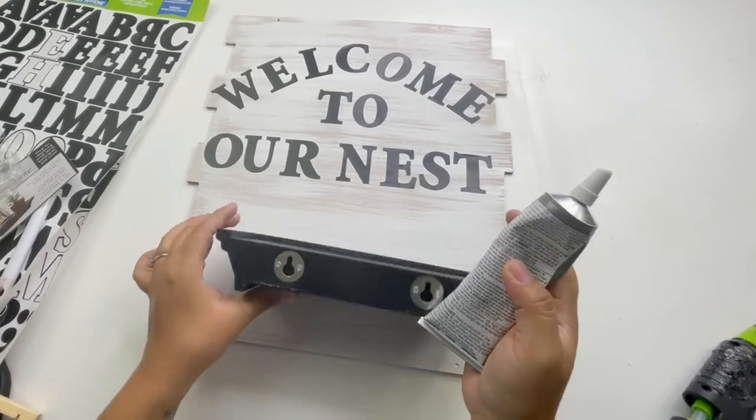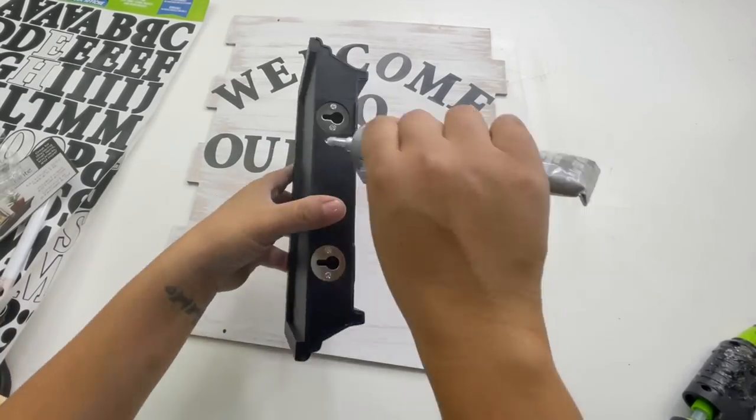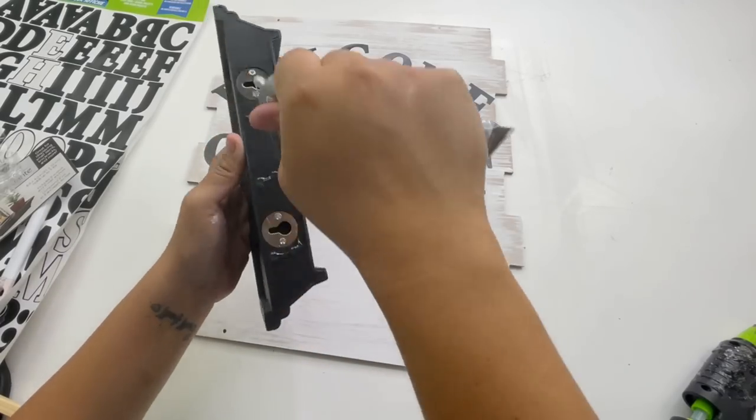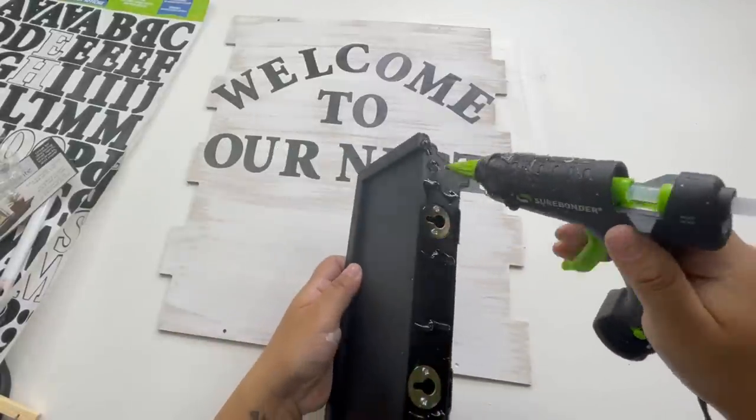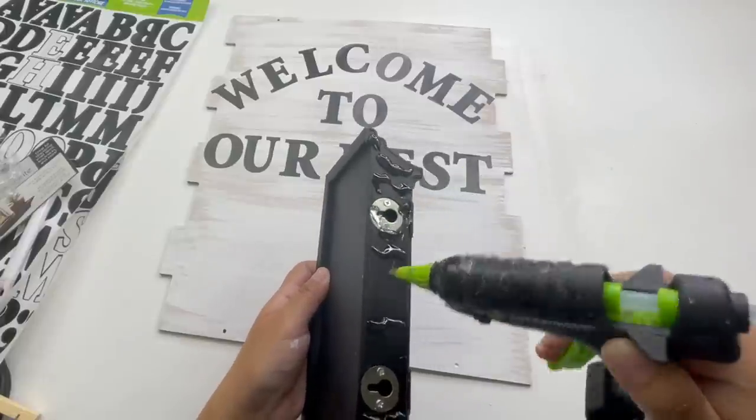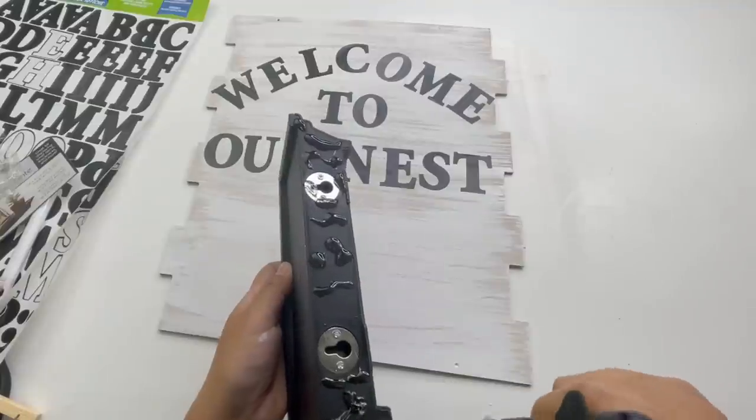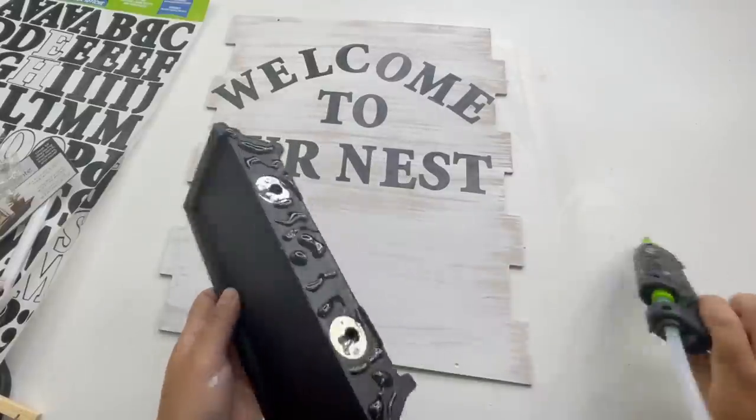To add the shelf I used a combination of hot glue and E6000 to make this sturdy. And the last thing I did was use a piece of the jute string to add it to the top for the hanger. I used the same little holes that the sign had and that is it.